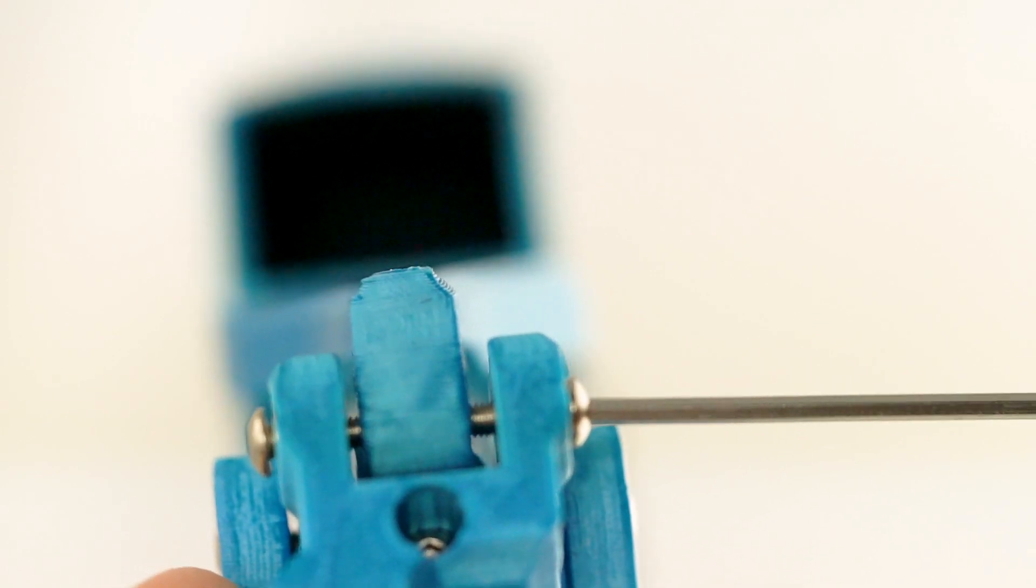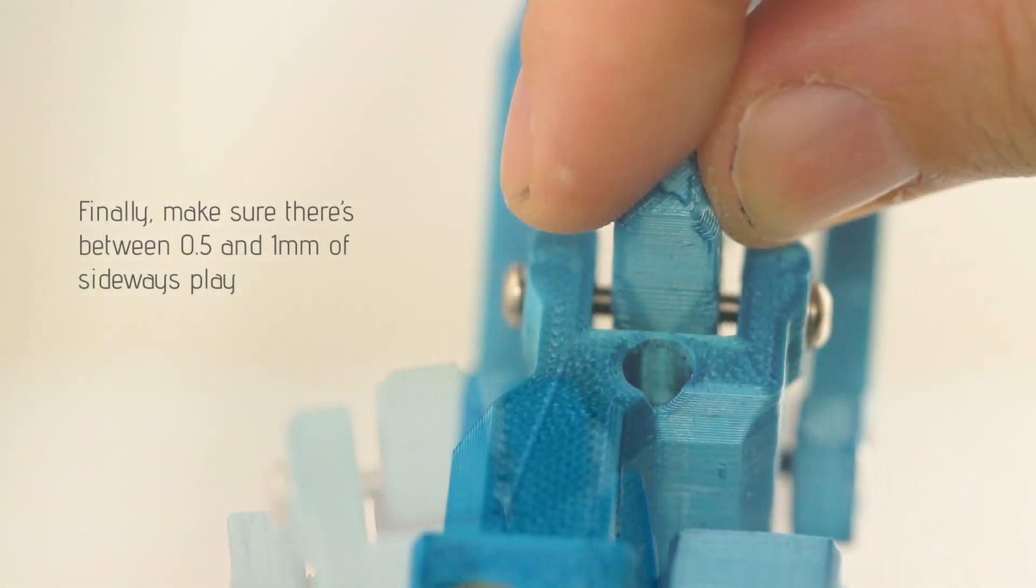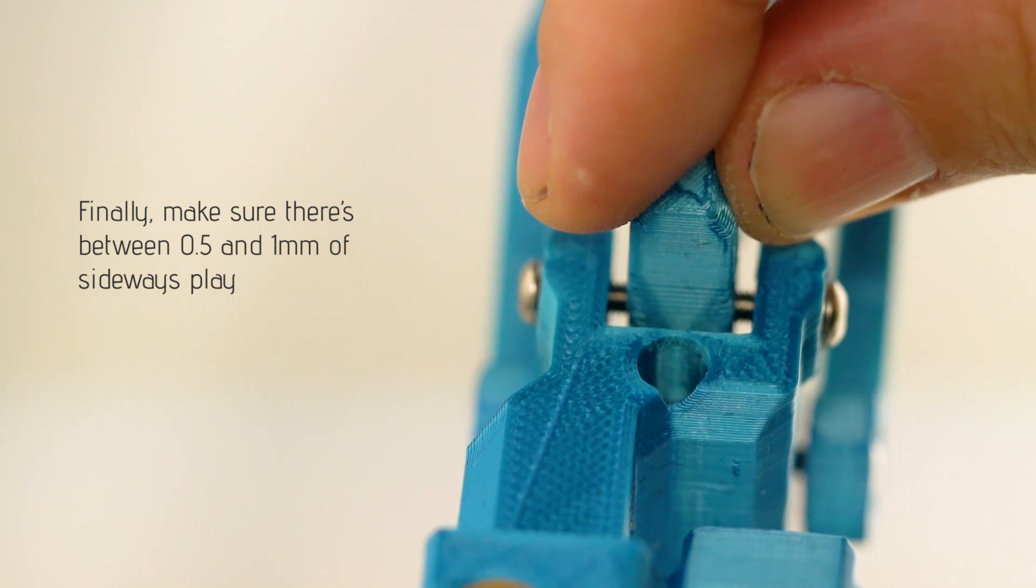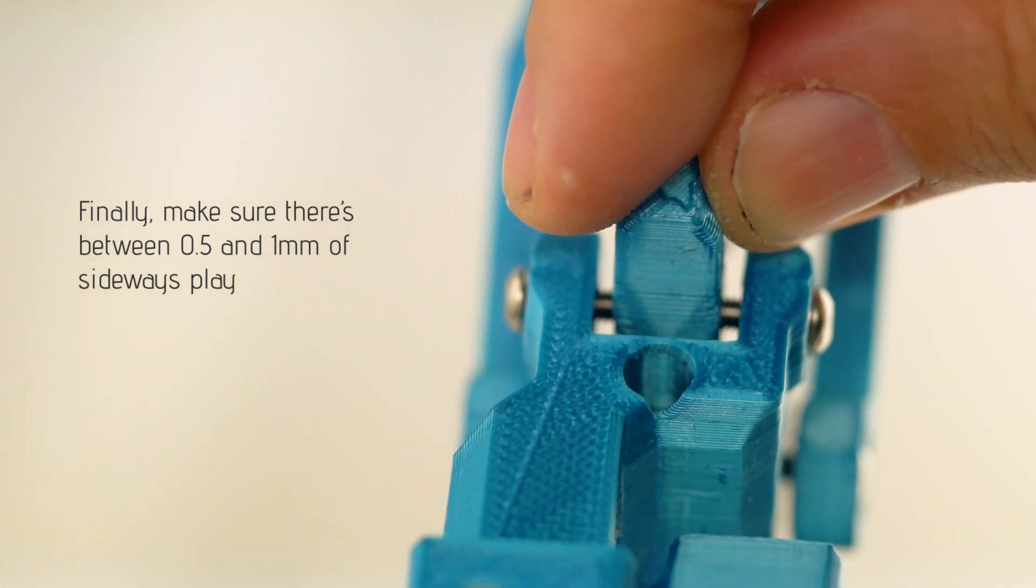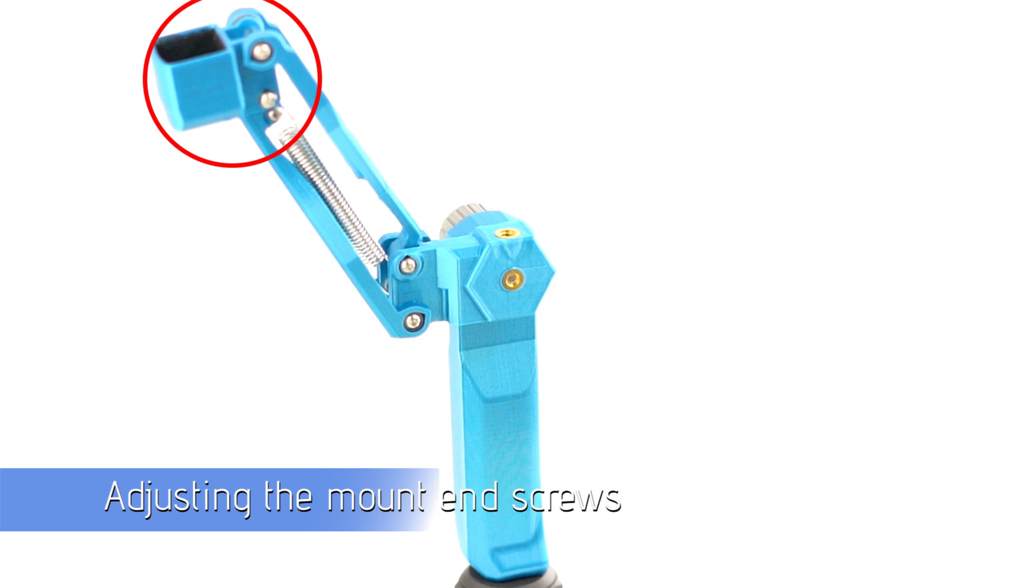And as you see it tightening, you'll see the other screw coming in. Now we need to make sure that there's at least 0.5 to 1mm of sideways play in these screws. And as you can see, that's perfect. The reason why we need the play is so that the high quality steel bearings can run as smoothly as possible. And now we're going to go to the mount end.